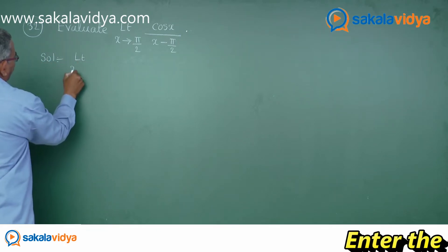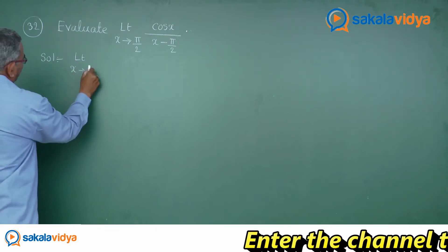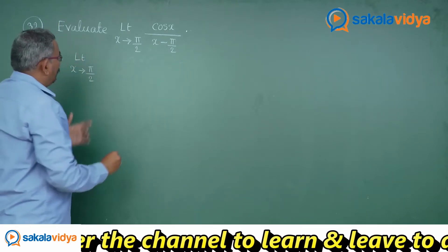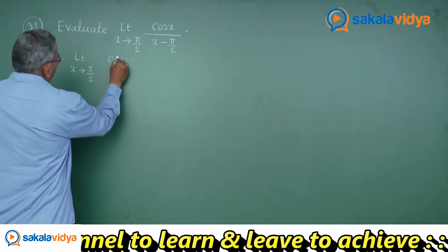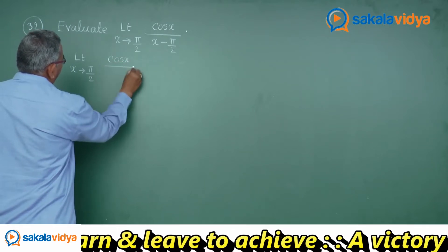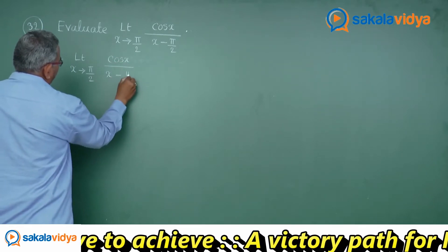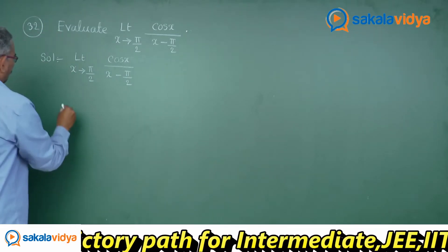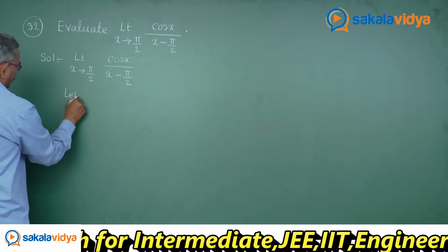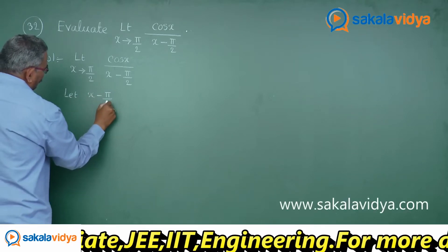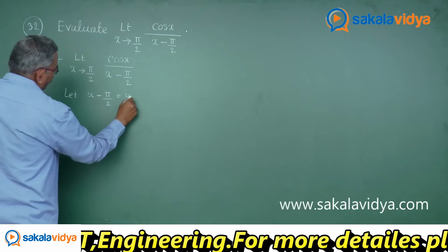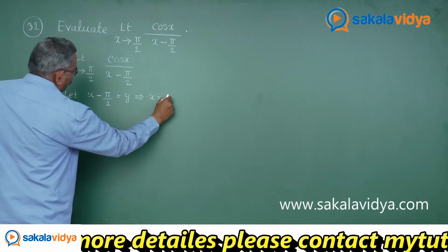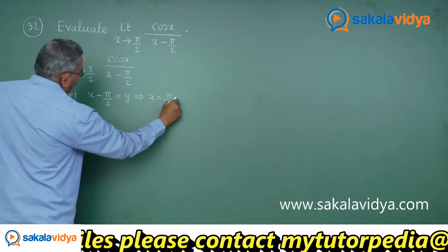Limit x tends to π/2. We have cos x divided by (x minus π/2). Now let us say x minus π/2 equals y. What is the x value? It is π/2 plus y.